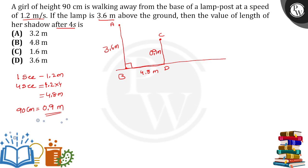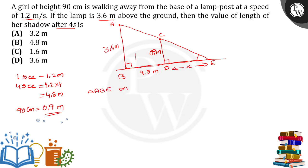The girl of height 90 centimeters is walking away from the base of a lamp post at 1.2 meters per second. The lamp is 3.6 meters above the ground. The lamp post makes equal angles with the base, so the angle is the same for both triangles. The girl and the lamp post are both standing vertically, and DE is the shadow of the girl. We can observe two triangles: triangle ABE and triangle CDE.